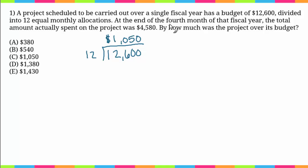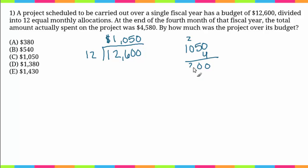Since we're looking at the end of the fourth month, we're going to multiply this by four. So one thousand fifty times four gives us four thousand two hundred. This amount is our budgeted amount for the four months.